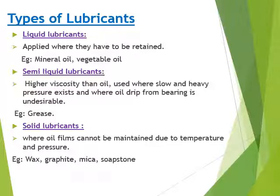The third type is solid lubricant, used where an oil film should not be maintained — for instance, in regions where temperature is very low, maybe around 5–10 degrees Celsius, where you cannot maintain either liquid or semi-liquid lubricant. In such cases we go for solid lubricants like wax, graphite, mica, soapstone, etc.